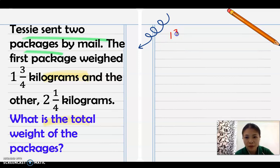In this problem we need to add because the question is what is the total. So 1 and 3/4 plus 2 and 1/4, it's similar fraction. We add 3 plus 1 is 4 over 4, 1 plus 2 is 3. 4/4 equals 1, so you regroup: 3 plus 1 equals 4. The total weight of the packages is 4 kilograms.